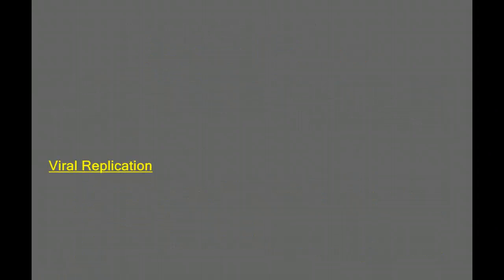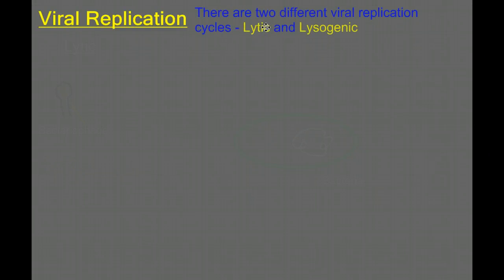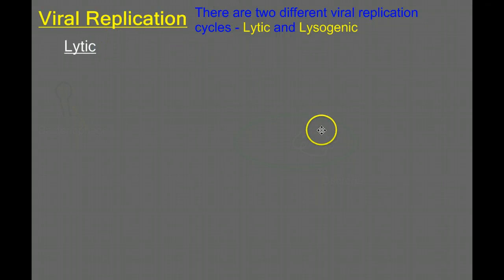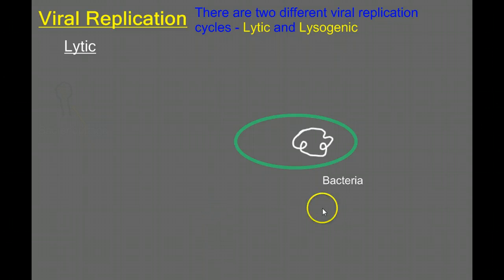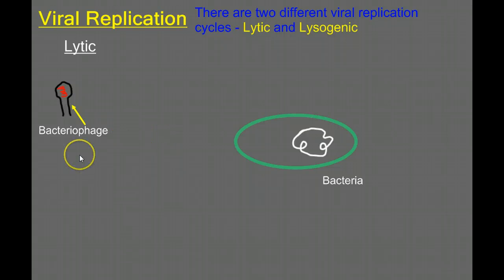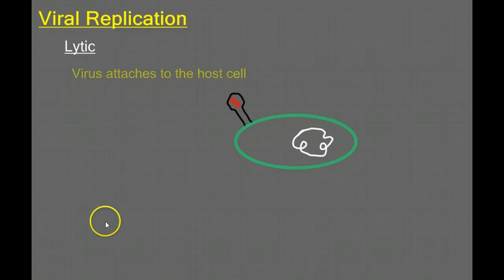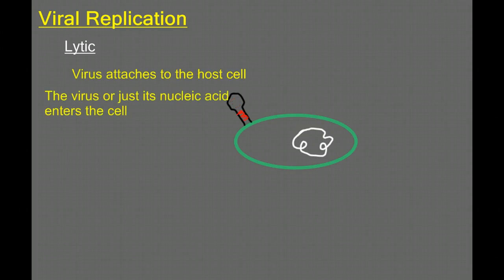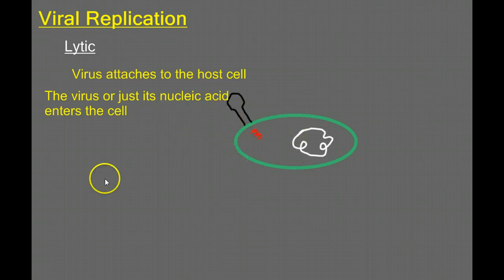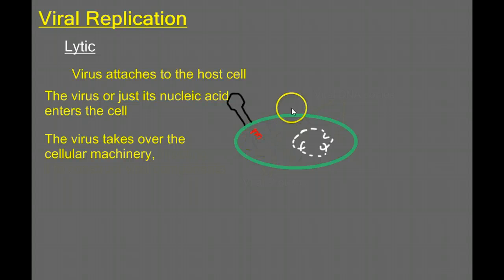We have two different viral replication cycles: the lytic cycle and the lysogenic cycle. We'll start with the lytic cycle. Here we have a bacterial cell — we use a bacterial cell because it's easier to see what's going on — and we need a bacteriophage, a virus that infects bacteria. The virus attaches to the host cell, then inserts the whole virus or just its nucleic acid into the cell. The viral DNA is going to take over the functioning of the host cell's machinery.